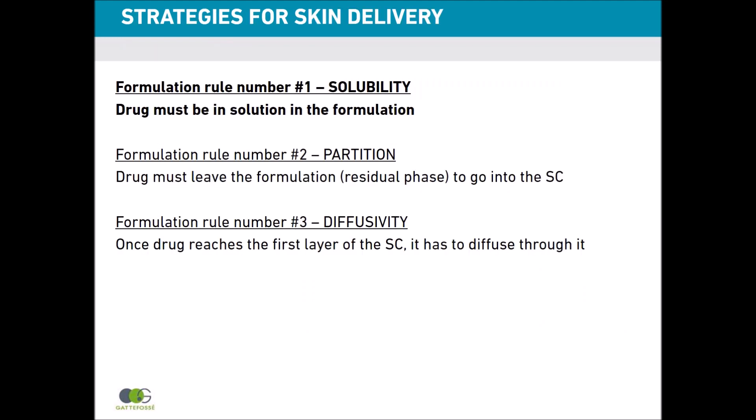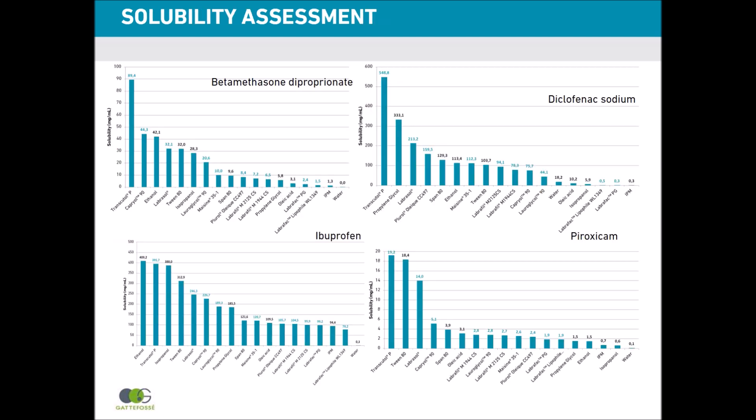Formulation rule number one says that the drug must be in solution in the formulation. To achieve this, it is important to screen different excipients and solubilizers with your drug. In this slide you can see the results of different drug screenings. Four different model drugs have been tested with different excipients in binary mixtures, allowing us to rank the ability of each excipient to solubilize the drug.